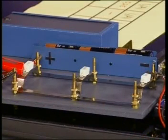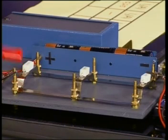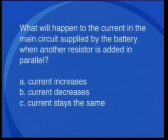Now let's investigate the effect on electric current when I add more resistors in parallel to our parallel circuit. Here's our circuit board, and I've added a third resistor — a 10 ohm resistor — to my circuit. I now have three resistors in parallel. Before we take any readings, I want you to think about this: what will happen to the current in the main circuit supplied by the battery when another resistor is added in parallel? A — the current increases, B — the current decreases, or C — the current stays the same.